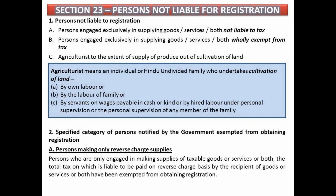Section 23 covers persons not liable for registration under GST. A person who exclusively supplies exempt goods, services, or tax-free goods or services is not required to obtain GST registration. Next, an agriculturist is not required to register, to the extent of supply of produce out of cultivation of land. An agriculturist means an individual or HUF who undertakes cultivation of land by own labour, family labour, or servants paid in cash or kind, or by hired labour under personal supervision or the supervision of any member of the family. Additionally, a person who only makes supplies under reverse charge — where the tax liability is on the recipient — is not required to register under GST.